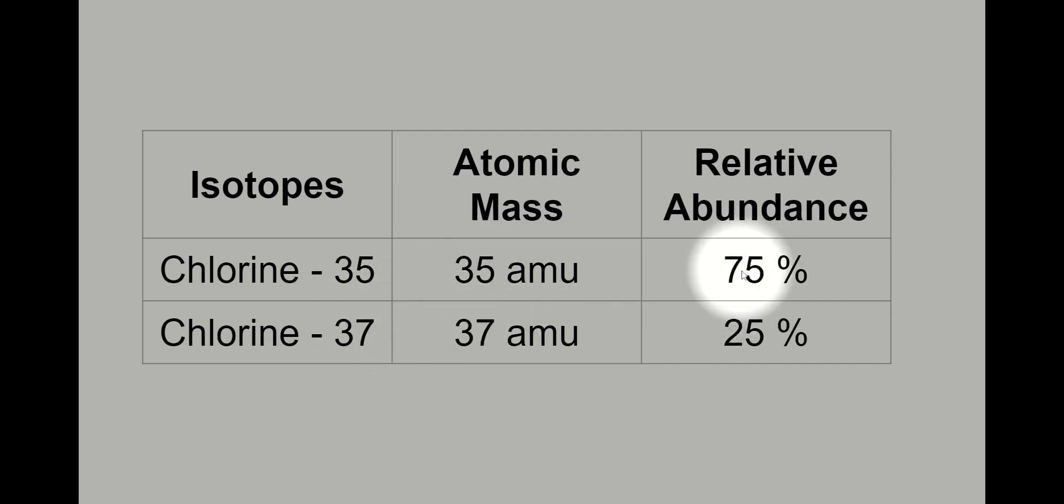Now the relative abundance of chlorine 35 is 75%. The relative abundance of chlorine 37 is 25%. So we can use these relative abundances and the known atomic masses to solve for the average atomic mass when these isotopes are mixed together.